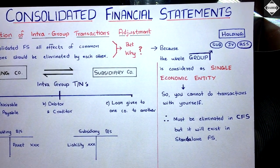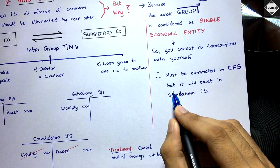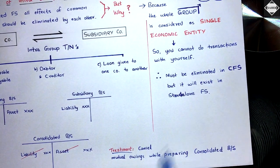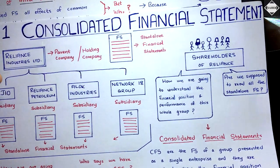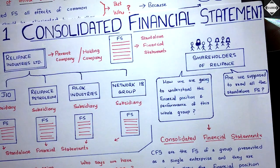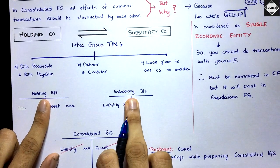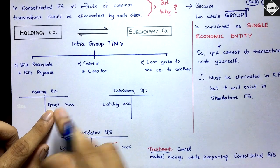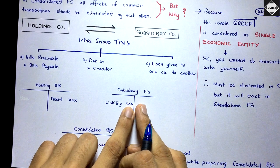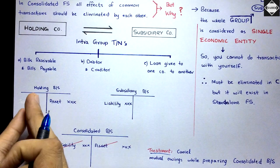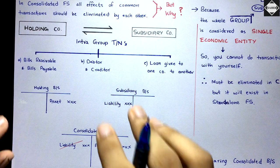Whatever the common transactions — inter-company balances, mutual owings — those must be eliminated in the consolidated financial statements. They will exist in standalone financial statements, but not in the consolidated balance sheet. For example, Reliance Industries records 'we have to receive five lakh from subsidiary' and the subsidiary records 'we have to pay five lakh to Reliance Industries' — that's fine in standalone, but not in consolidated.